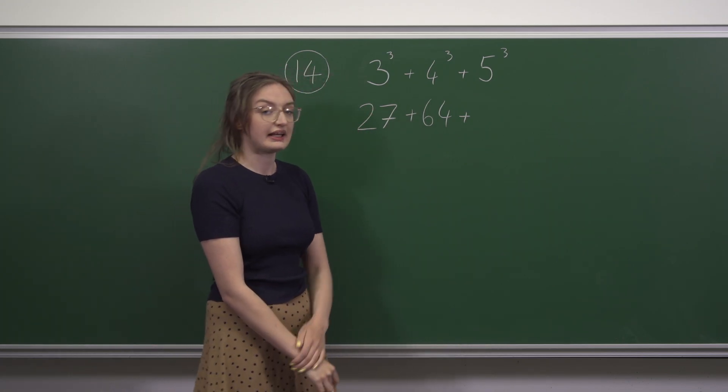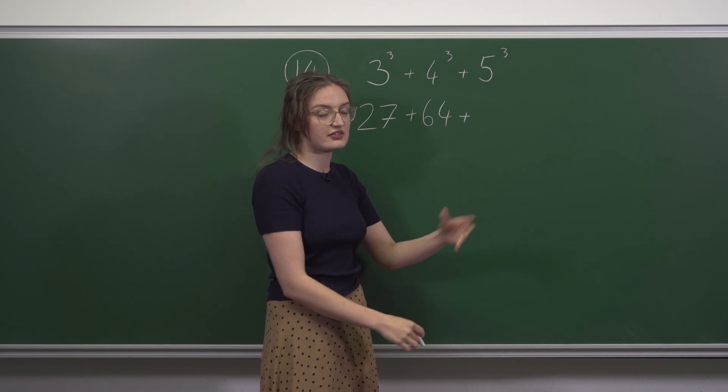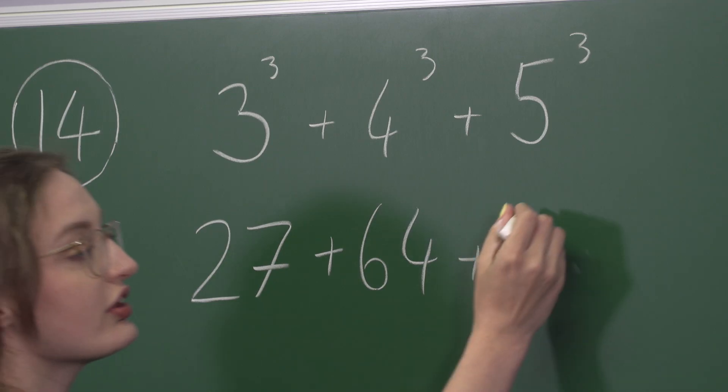5 cubed, again 5 times 5 times 5 is 25 times 5, or 125.